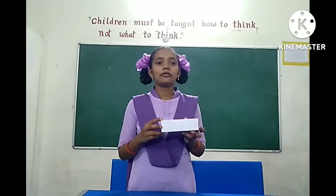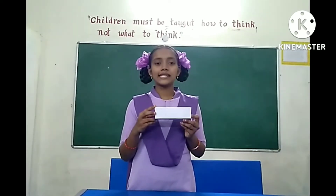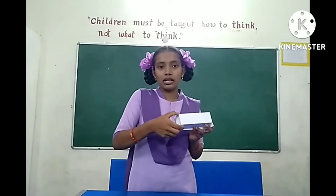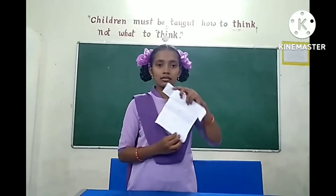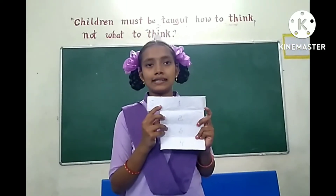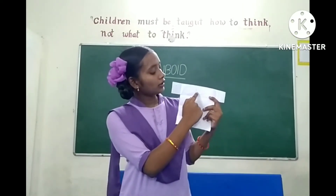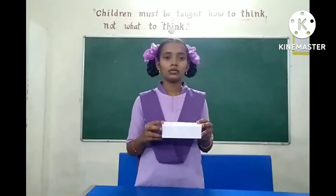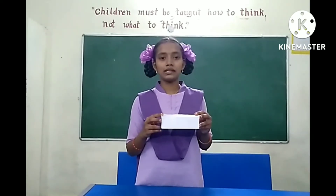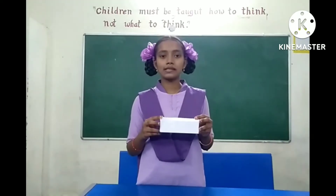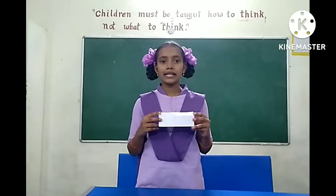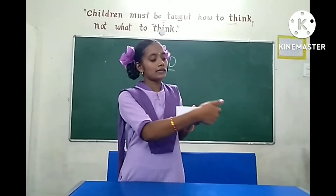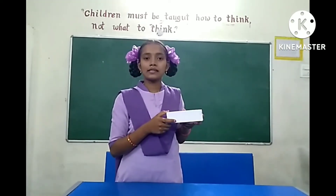Let's take the example of this box. You can see that the face of this box represents a rectangle, and it is having thickness as well. Let's open this box — it is having six sides. Any solid shape like this box is called a cuboid. Cuboid has six faces, and the faces are called the sides of the cuboid.